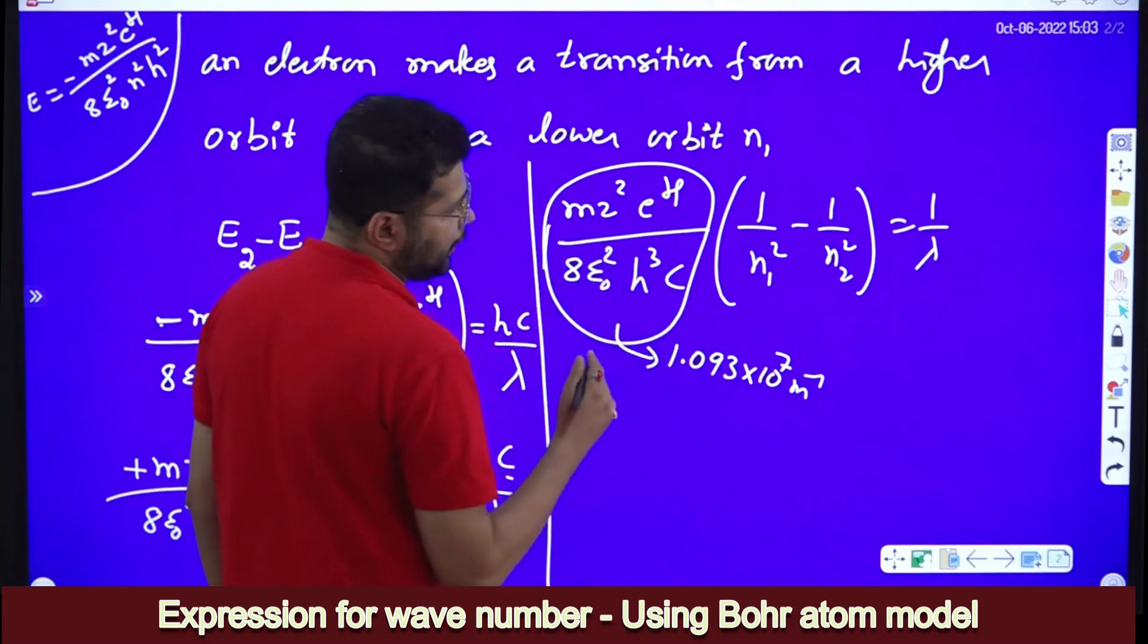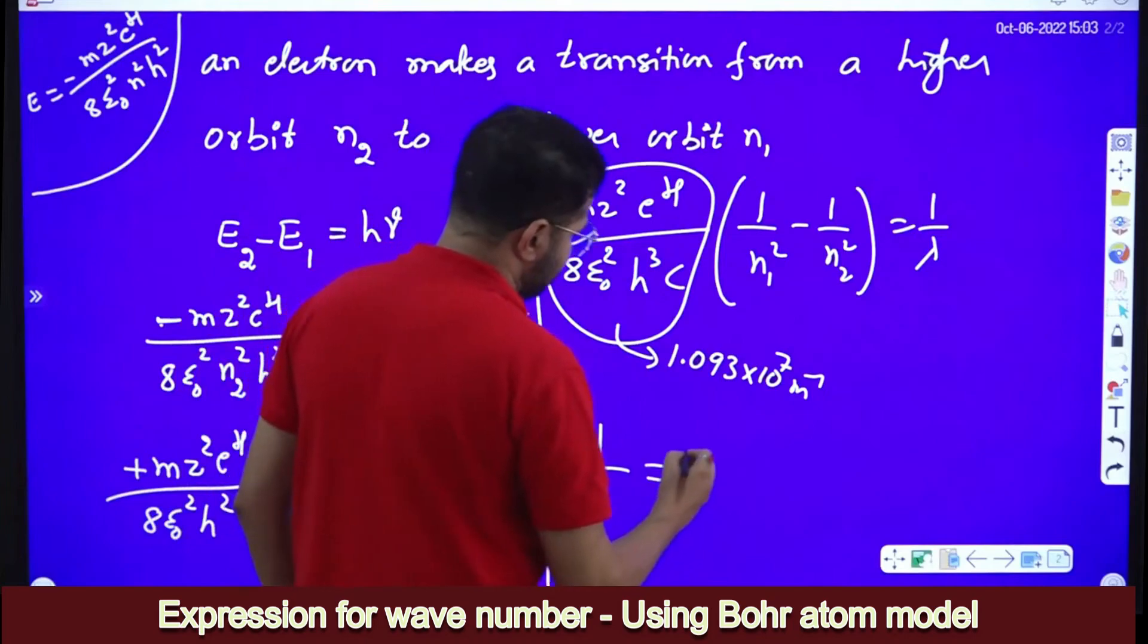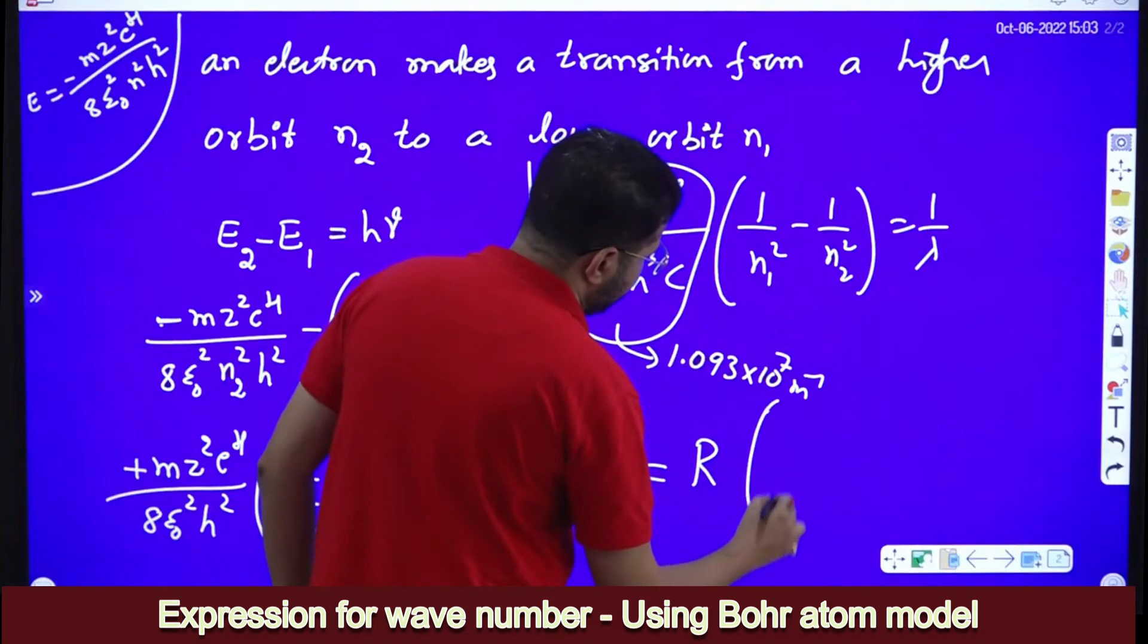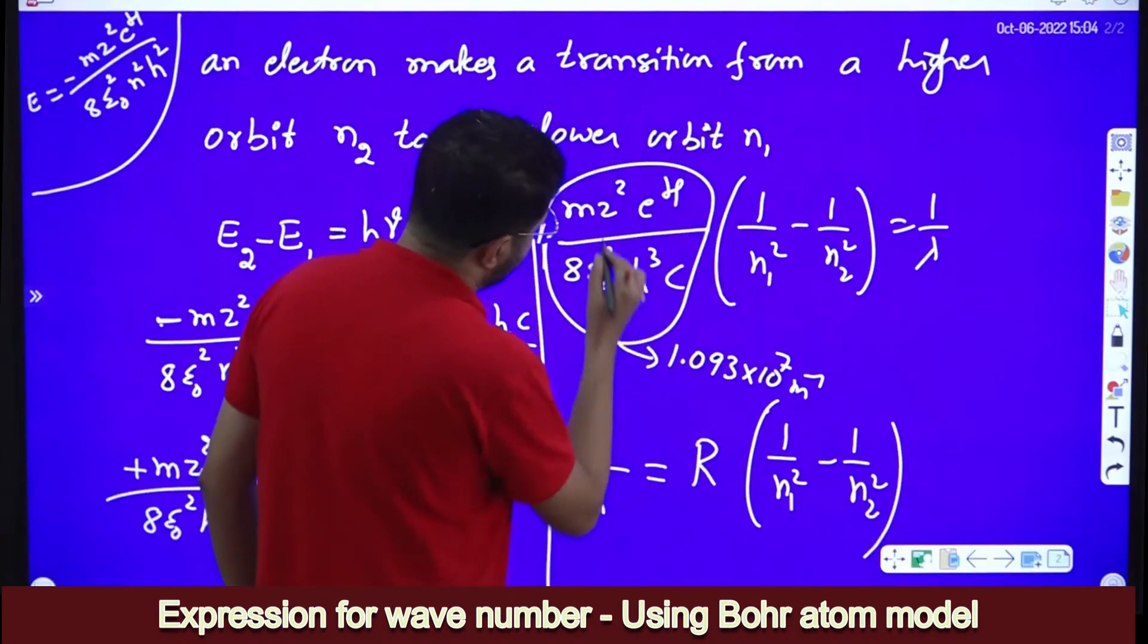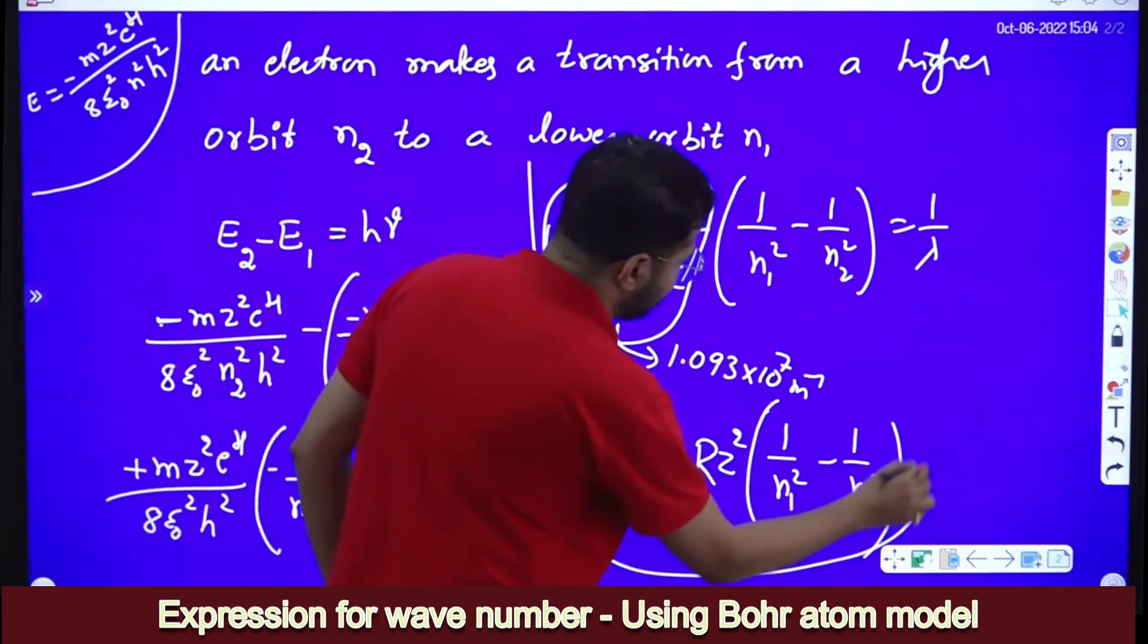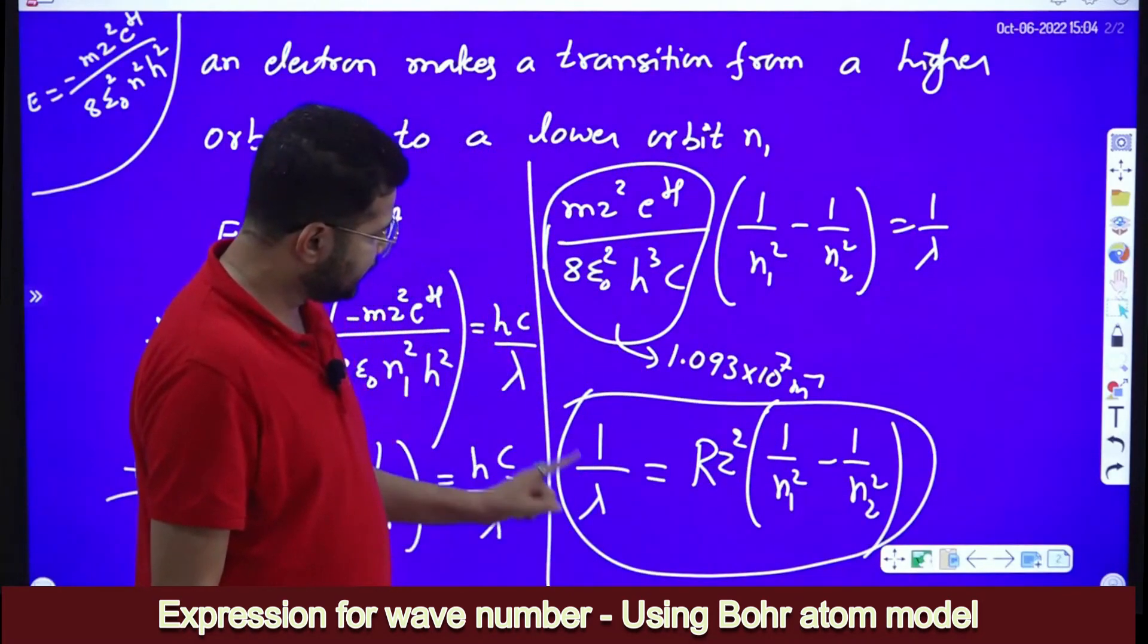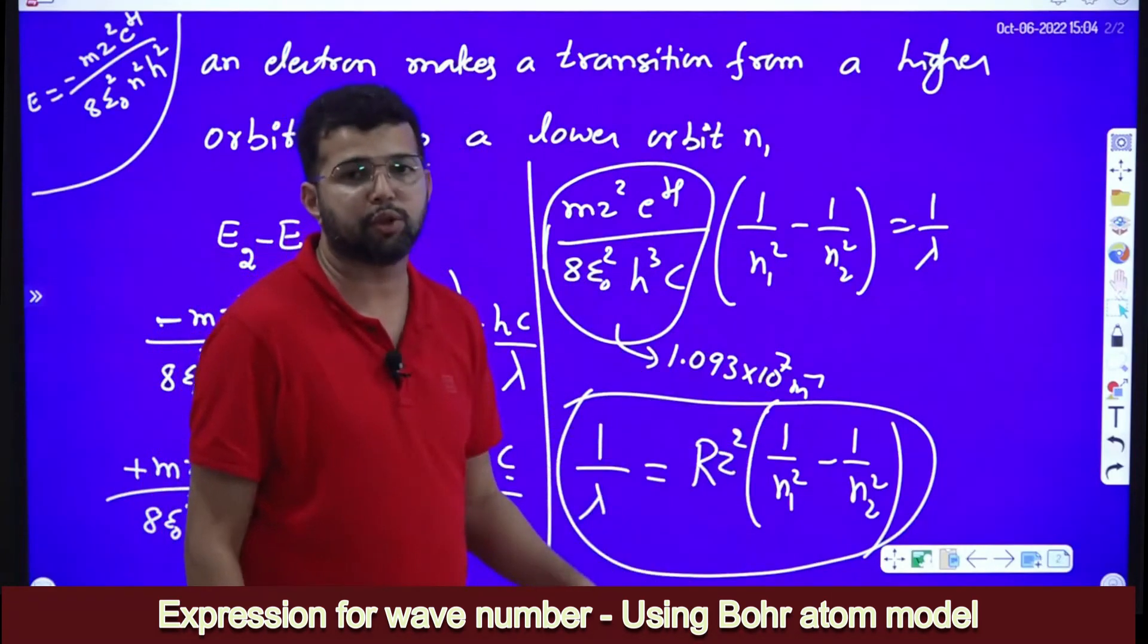The equation for wave number 1 by lambda is equal to R into 1 by N1 square minus 1 by N2 square. This Z square comes here actually. If in the case of hydrogen, say you are doing calculation for hydrogen, then you neglect this Z, because for hydrogen Z equal to 1. For hydrogen, this equation is simply 1 by lambda equal to R into 1 by N1 square minus 1 by N2 square.